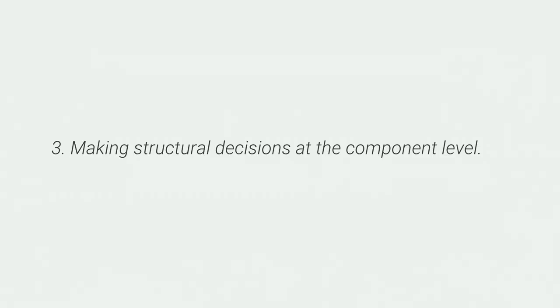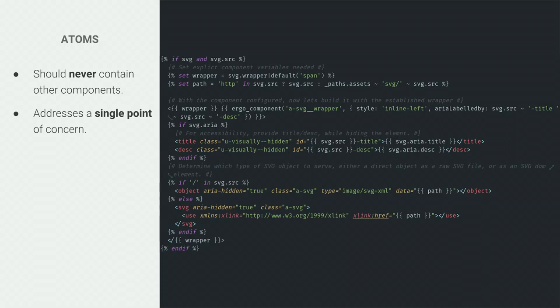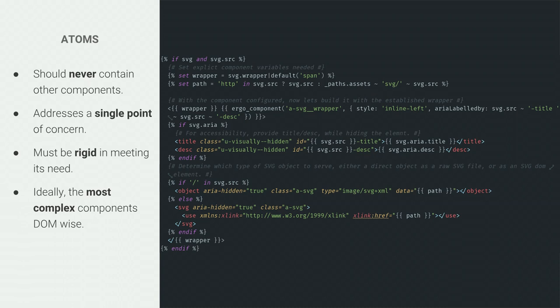Now into specific component types. For atoms, the philosophy is they should only do one thing well — similar to Brad Frost's methodology. The HTML might look more complex but it has fallbacks to ensure a clean, simple DOM element at the end. An atom never includes another component, it's rigid with some options but no overrides and no blocks. It's a truly simple component.